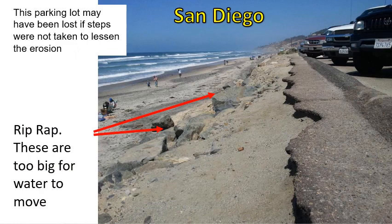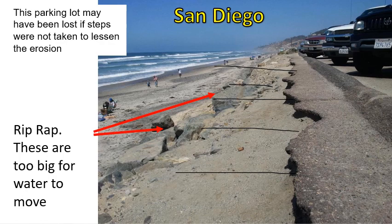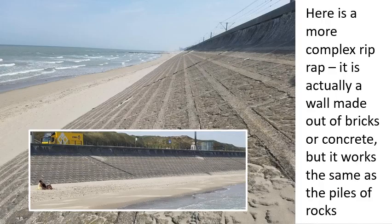In San Diego, there was a beach parking lot that used to extend out further. A bad storm came in and took too much of the land away, and the parking lot collapsed. They didn't want to lose the rest of it, so they put some really big rocks in — that's riprap. The water can't grab those rocks and move them because they're too big, so the parking lot stays in place. Here's a fancier example of riprap: a brick or concrete wall that works the same way. They paved over the shore so the water can't touch the sediments, and if it can't touch them, it can't move them.